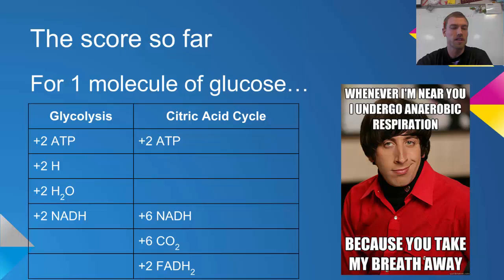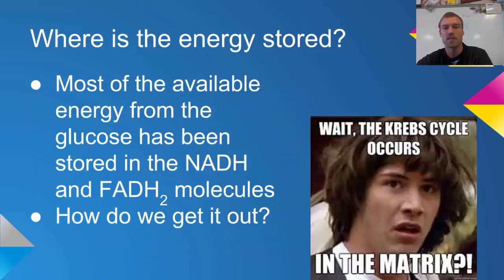You'll notice that we've only produced a little bit of ATP so far, only four molecules. That's not that much of an improvement. But the question is, where is most of this energy being stored that is taken out of the glucose?